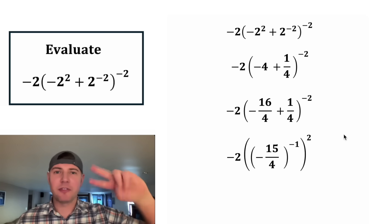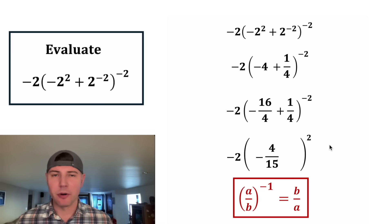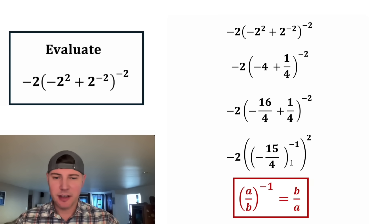And then a negative exponent ends up flipping your fraction. Here are the notes right here. A over b to the negative one is equal to b over a. So this negative 15 over four to the negative one would be negative four over 15. This is the same thing as this.